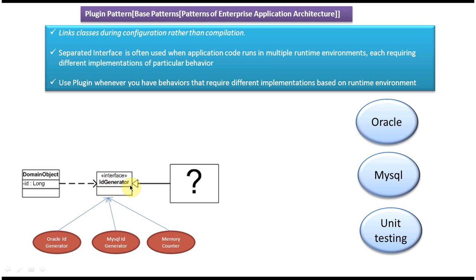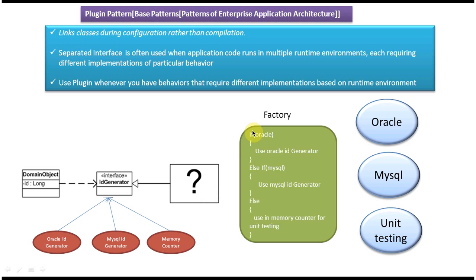We have defined an interface and this interface implementation will be given by three different distinct classes. So how can we write a factory class? If the runtime environment is Oracle, then we have to use Oracle ID Generator. Else if it is MySQL, we have to use MySQL ID Generator. Else if it is unit testing, we have to use Memory Counter. So this plugin class will be decided by the different kind of environment.